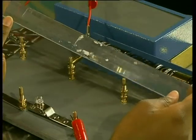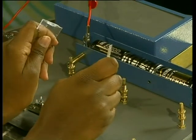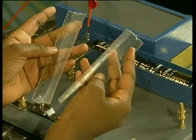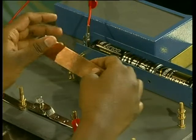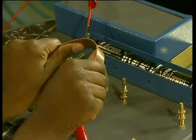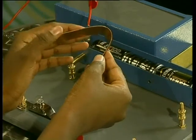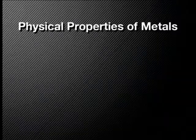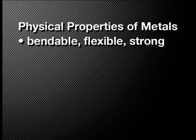Let's have a look. We will start by bending this piece of plastic. Do you notice that the plastic only bends a little and then it breaks? The plastic ruler is not flexible. Now let's bend the piece of metal. Can you see that the metal bends very easily and that it doesn't shatter? The first property of metals that we observe from this experiment is that it bends easily. We say that metals are flexible.